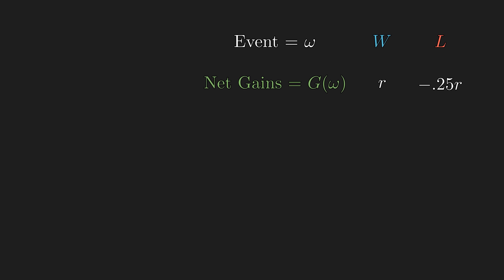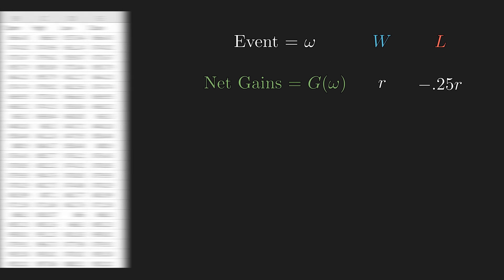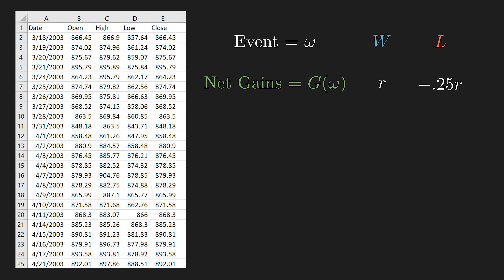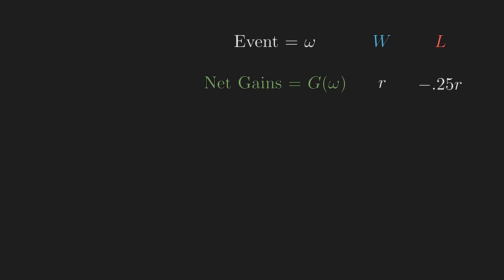Suppose you buy an S&P 500 index fund — a fund averaging the top 500 American companies by value — and implement a strategy to sell at a profit when the price doubles and cut losses when the price drops by 25%. Back-testing this strategy on historical data starting from 2003, the probability of winning is roughly 59%. Since we win more often and each win pays much more than each loss, the expected payout per play is positive. But how much should you risk each play?